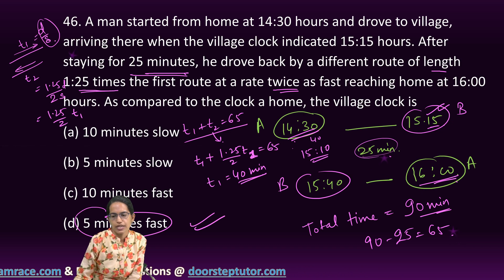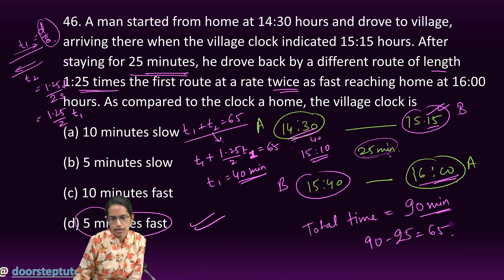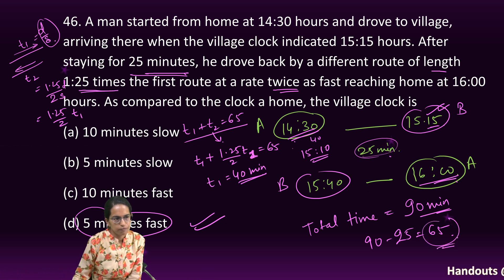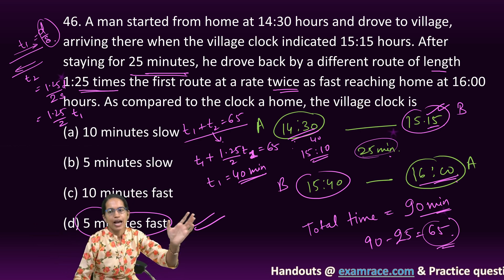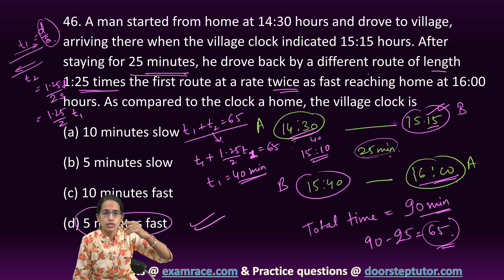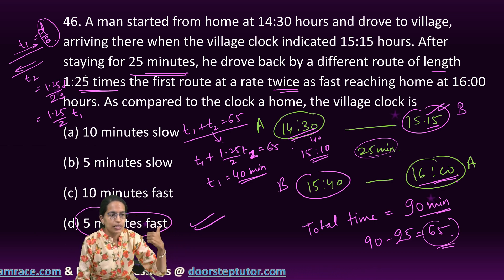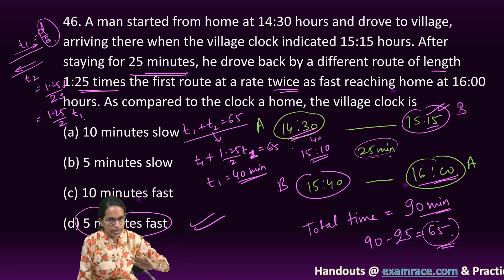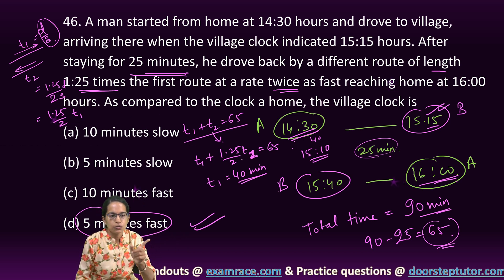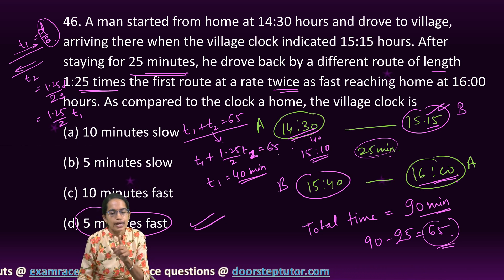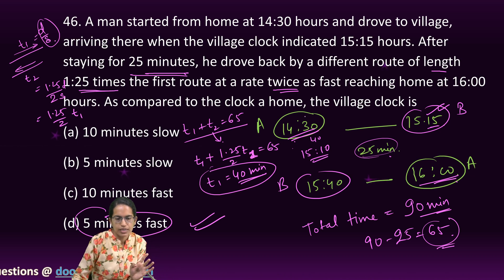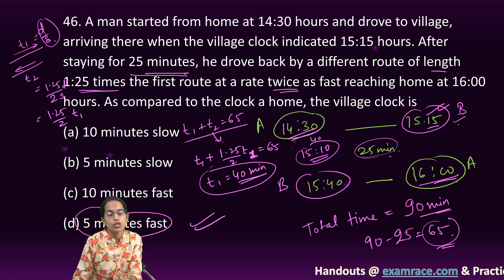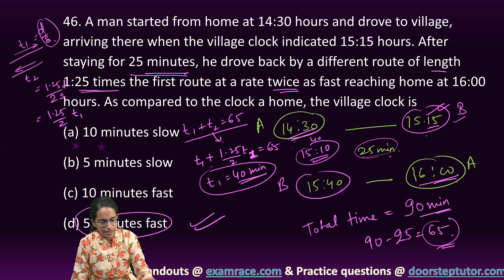I repeat again what I do is I find out which is clock A, which is clock B. The total difference from the clock A minus the staying time would give me the time traveled, which is 65 minutes. That 65 minute is T1 and T2 together and it says that going in, the time was distance by speed. Coming back, the time T2 was 1.25, that's the distance divided by twice, that's the speed. So I can write it as 1.25 by 2 T1. Now T1 plus T2 gives me 65. Calculating T1 gives me 40 minutes. Now I add 40 minutes to this, it gives me 15.10. Now 15.10 was the real time when I reached but the clock in the village was showing 15.15. That means the clock is 5 minutes ahead of time.